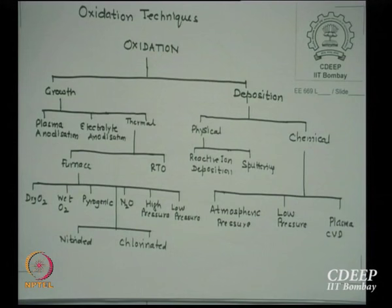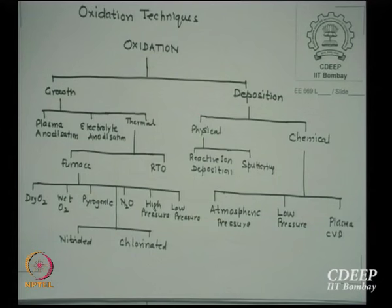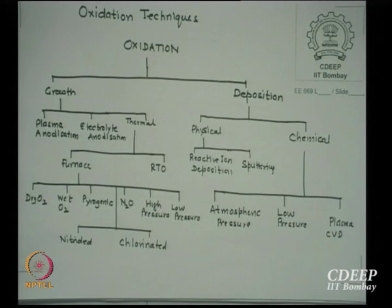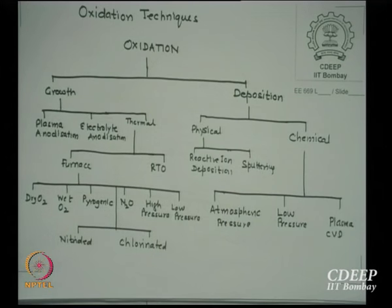During oxidation, we can also introduce nitrogen to create nitrided oxides, or introduce chlorine to create chlorinated oxides. Nitrided oxide was very important for us because it was the way we made India's first radiation-hard circuits. These are the possible thermal oxidation processes.